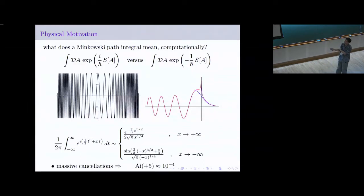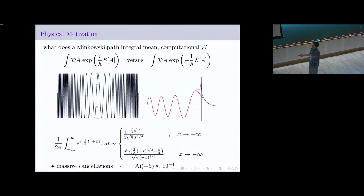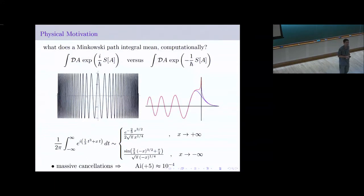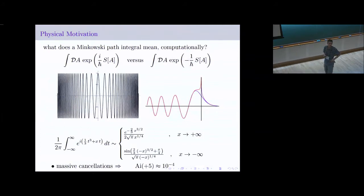Here's a plot of the Airy function — oscillating on one side when the parameter x is negative, decaying exponentially when x is positive. When x is large, here's a plot of the real part of that integrand at x equals 5: it's oscillating like crazy. There's absolutely no way you can do that integral — there are massive cancellations. The Airy function at plus 5 is 10 to the minus 4, yet you have to add up all those areas to get that answer. To do this integral via Monte Carlo is simply impossible.